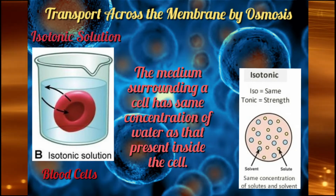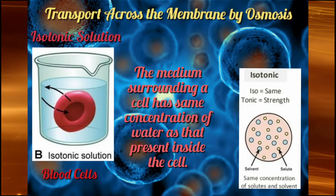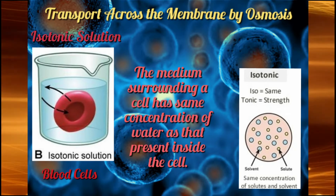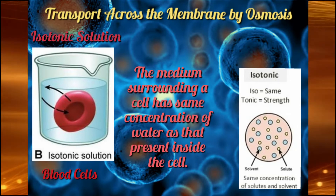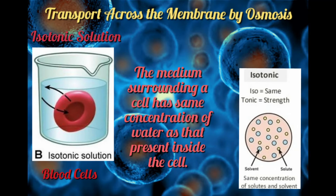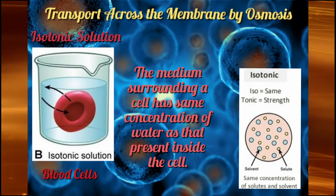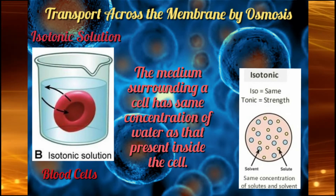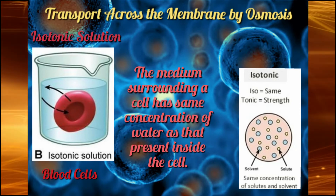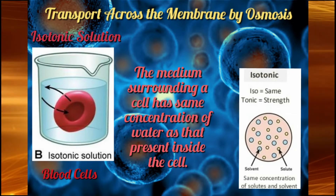Second is isotonic solution — iso means same, tonic means strength. Over here, the amount of water is same inside the cell and in the solution surrounding the cell. Water molecules will move both inside and outside the cell, so the concentration of water will remain the same. The medium surrounding a cell has the same concentration of water as that present inside the cell. This type of solution where the amount of water and solute is same both inside and outside the cell is called isotonic solution.